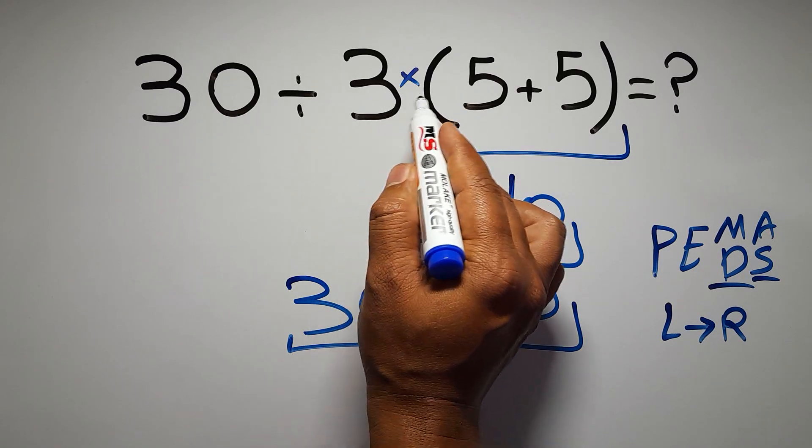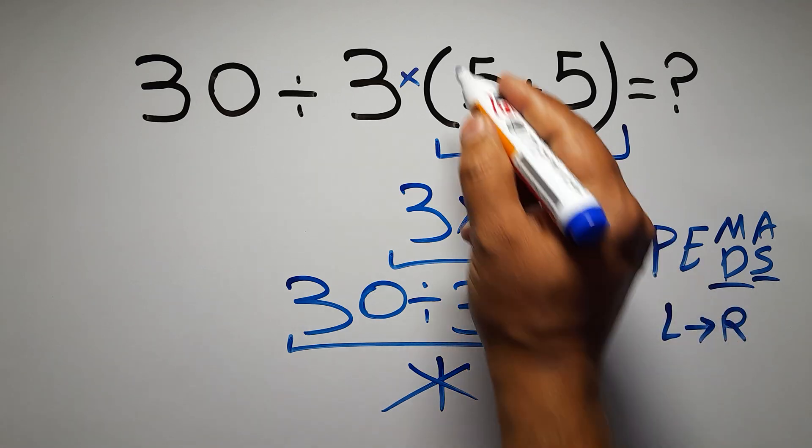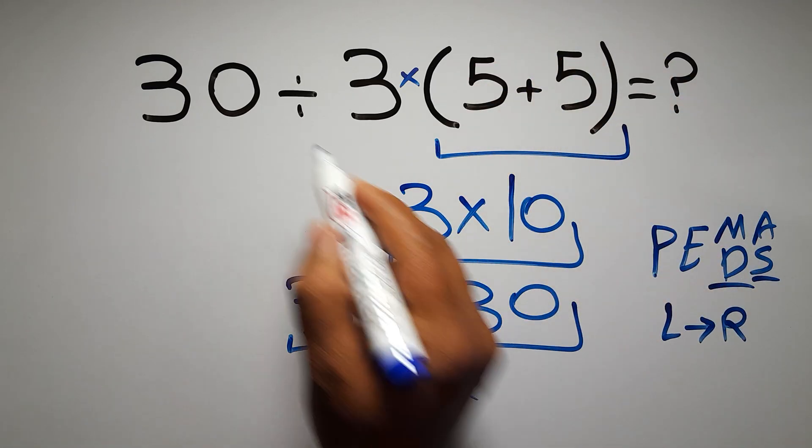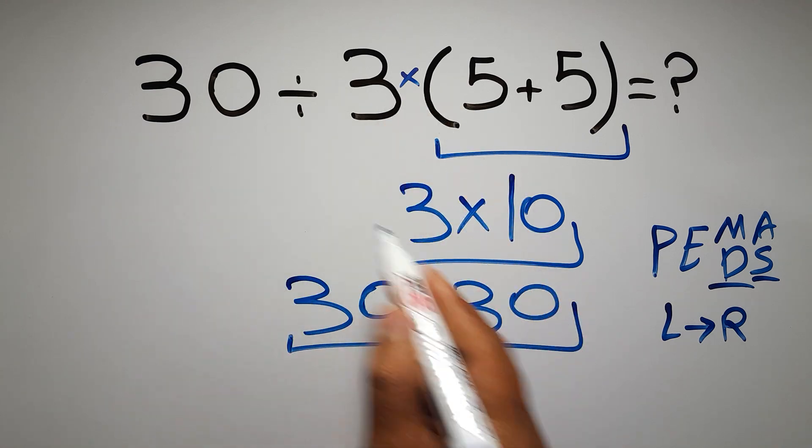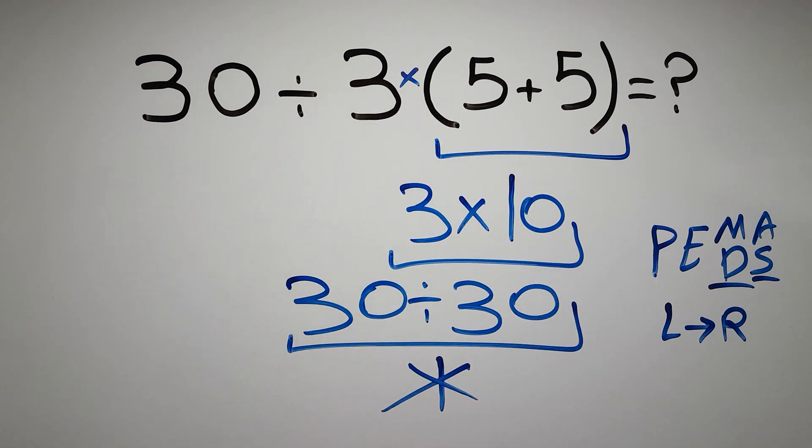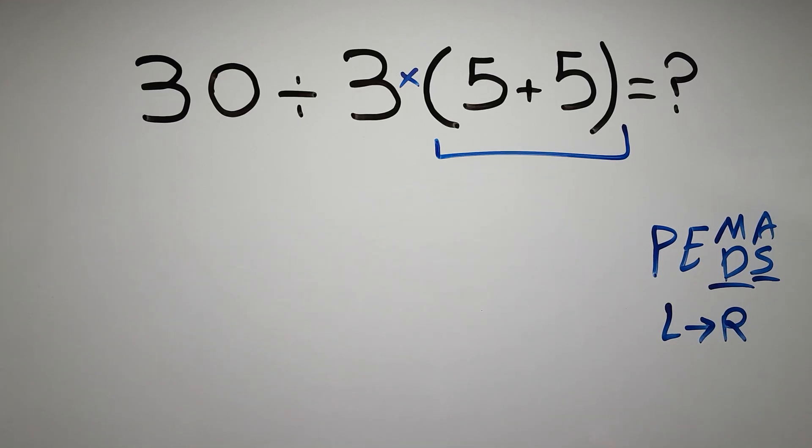Okay, so according to PEMDAS, first we have to do this parentheses, then this division, and finally this multiplication. If we do this multiplication before this division, it is wrong. So first this parentheses.